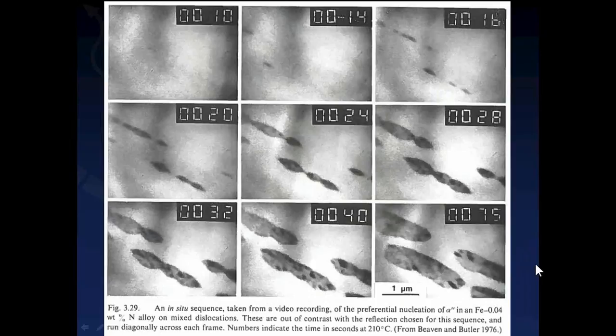Paul Butler also did some in situ experiments during that time. Figures extracted from his in situ video recordings show a scale marker of one micrometer — on the order of what one would achieve with optical microscopy. Since these experiments were done using a high-voltage electron microscope, the specimens were much thicker, and there was really no quantitative information at all.